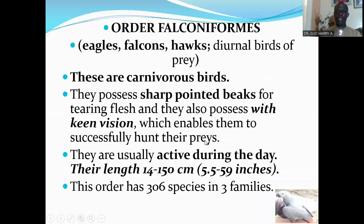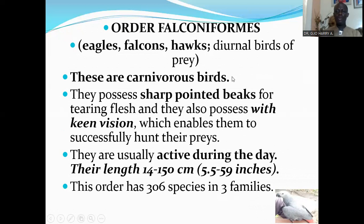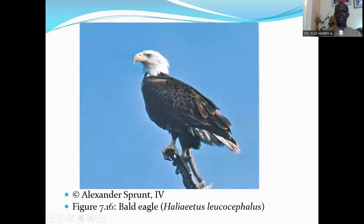The next order is Order Falconiformes, which has the eagles, falcons, hawks, and other diurnal birds of prey. These are carnivorous birds. They possess sharp-pointed beaks for tearing flesh and also possess keen vision, which enables them to successfully hunt their prey. They are usually active during the day — that is why they are said to be diurnal birds. Their length is 14 to 150 centimeters, that's 5.5 to 59 inches. This order has 306 species in three families. Here is a picture of the bald eagle.